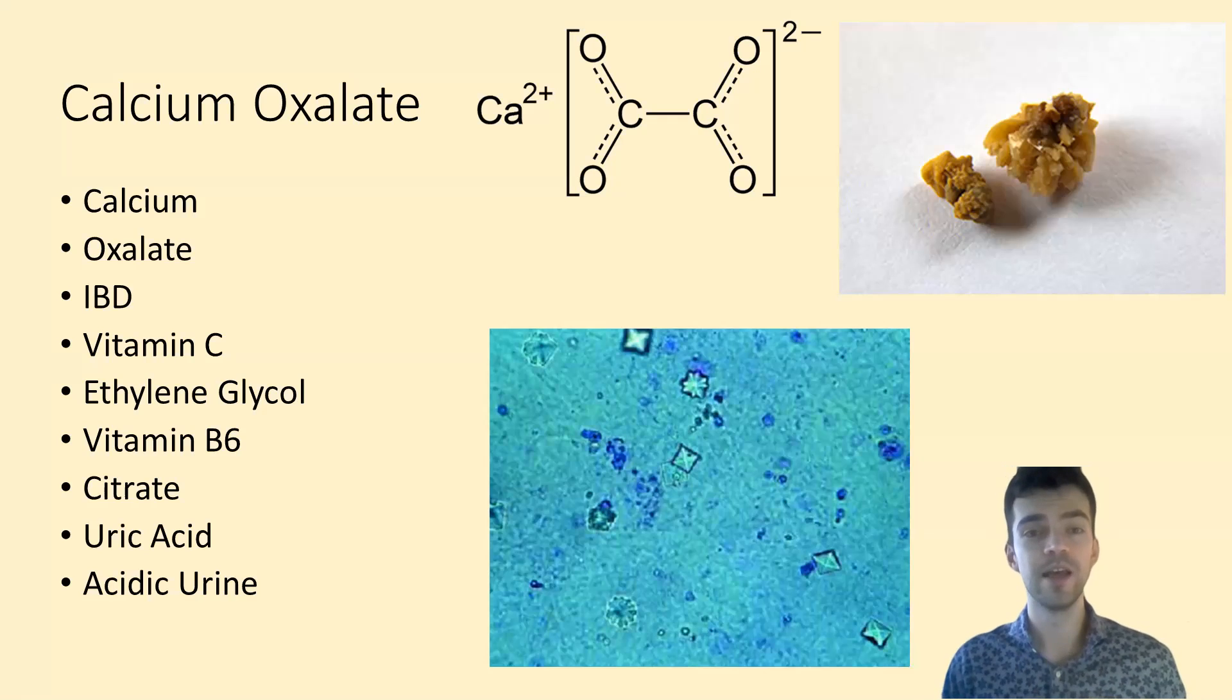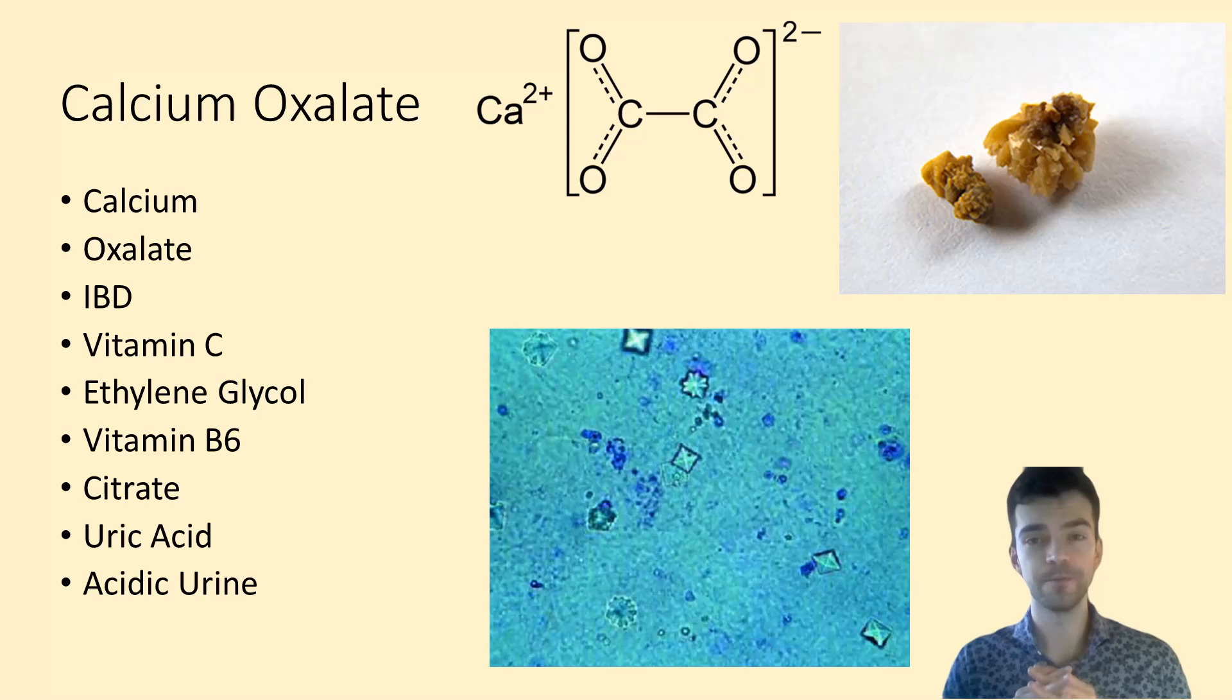As the name implies, it has two components: calcium and oxalate, both of which we get from our diet. Calcium comes from cow's milk and cheeses mainly, and then oxalate comes from spinach, rhubarb, chocolate, and other plant products. Oxalate in plants is used to take calcium out of the plant system so that it doesn't calcify.